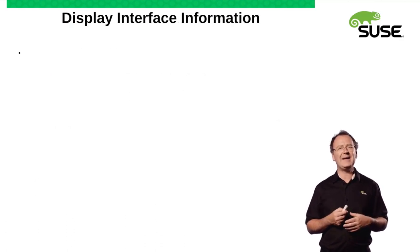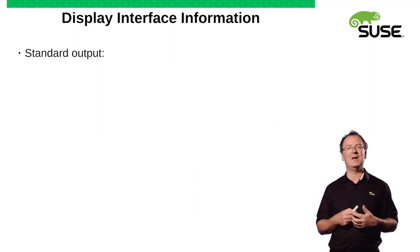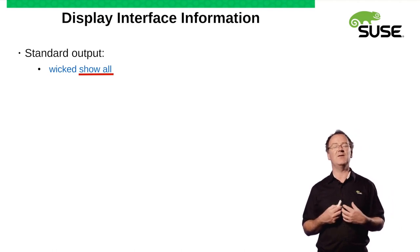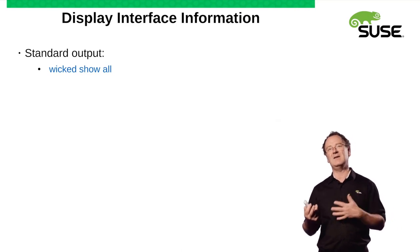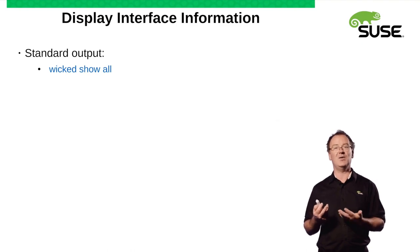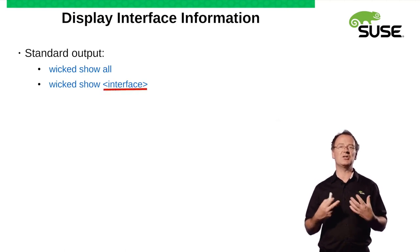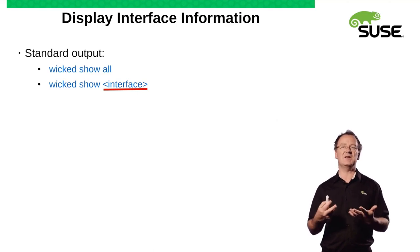So displaying interface information with Wicked. Running wicked show all will show you the information about all the interfaces — so the loopback interface, your wireless interface if it's running, and your hardwired Ethernet card if that also happens to be running. Or you can show the information about a single interface by doing wicked show wlan0 or eth0, for example.